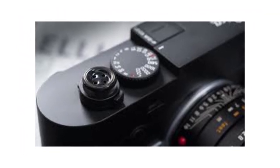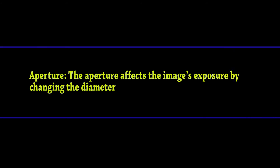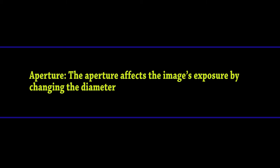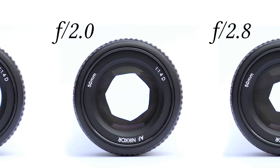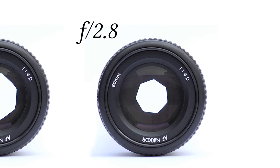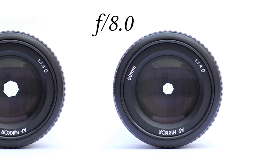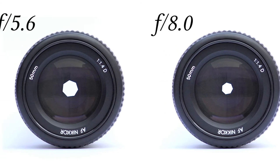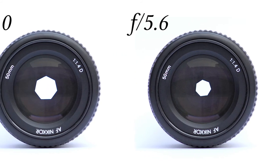Aperture. The aperture affects the image's exposure by changing the diameter of the lens opening, which controls the amount of light reaching the image sensor. This range is expressed in F-stops. For DSLRs, the lens F-stop limits vary, but they are usually defined by reading the side of the lens — for example, F-2.8 or F-3.5 to F-5.6.